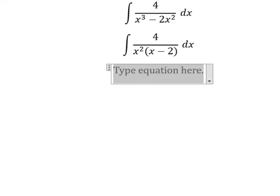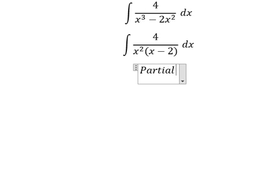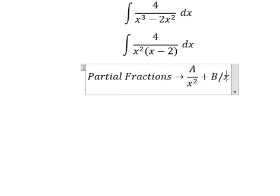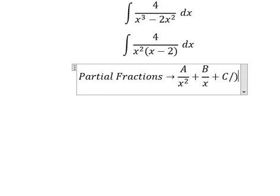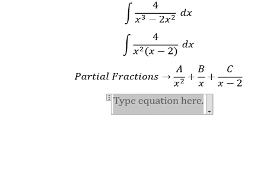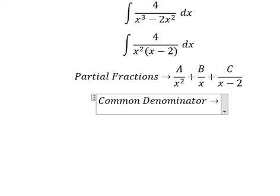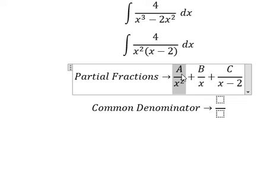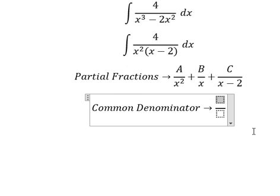can use partial fractions. So I will put A over x squared, B over x, C over x minus two. And now we can do common denominator, so this one is missing x minus